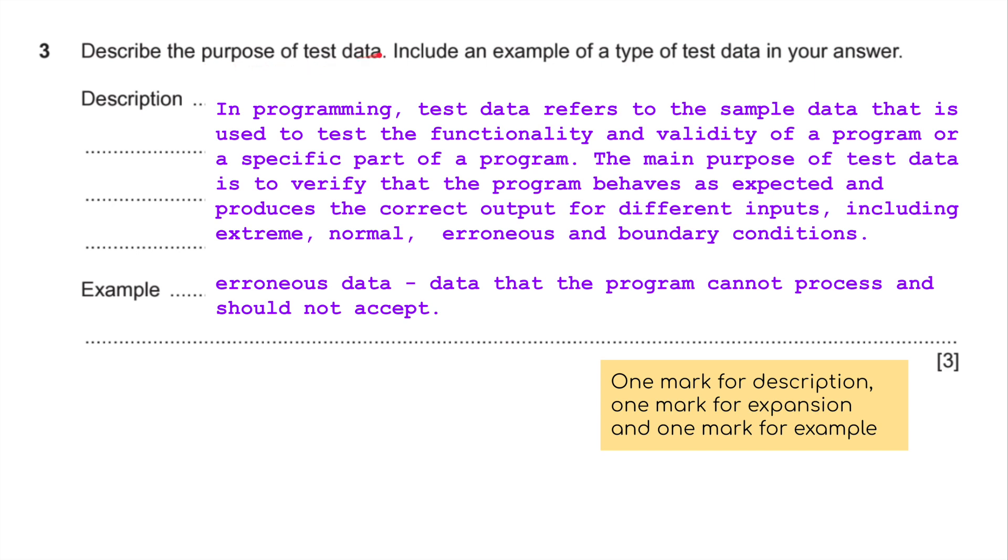Here we need to know what test data is. Describe the purpose of test data. Include an example of a type of test data in your answer. We've all used test data when we've been doing trace tables. In programming, test data refers to the sample data that is used to test the functionality and validity of a program or a specific part of a program. The main purpose of test data is to verify that the program behaves as expected and produces the correct output for different inputs. Including extreme data, normal data, erroneous data, and boundary conditional data. My example here, erroneous data. Basically data that the program cannot process and should not accept. If a user has been asked to enter numbers, a set of numbers, and somebody types in numbers actually in words, somebody types in the number 10 as T-E-N, then obviously that should not be accepted and would not work. Probably gone a little bit overboard there, but that would give us three marks.